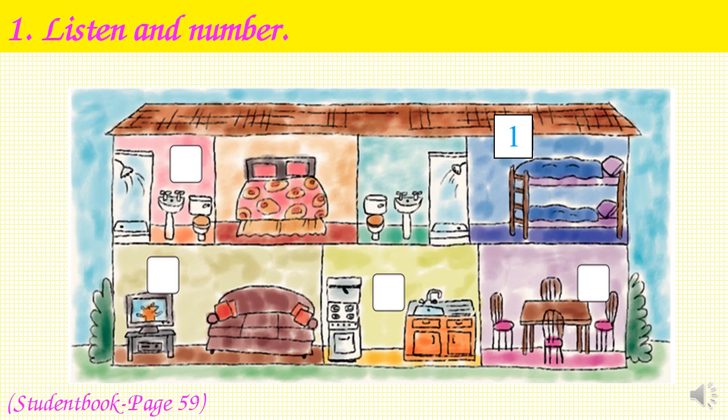Let's listen and check. One: Look, this is my house. It has an upstairs and a downstairs. Upstairs you can see two bedrooms. Two: Also upstairs, you can see two bathrooms. Three: Downstairs, there is a kitchen. Four: Look, this is the living room. It has a TV and a sofa. Five: And here is the dining room. The family can eat here.